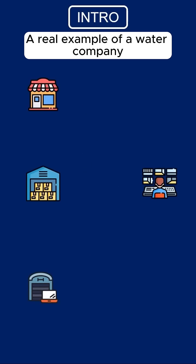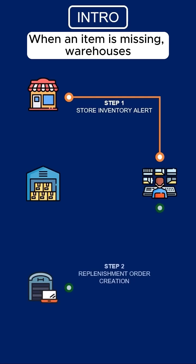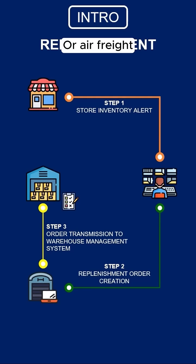Let's consider a real example of a water company for which stores send replenishment orders to a central warehouse when an item is missing. Warehouses prepare and pack orders that are delivered by road or air freight.